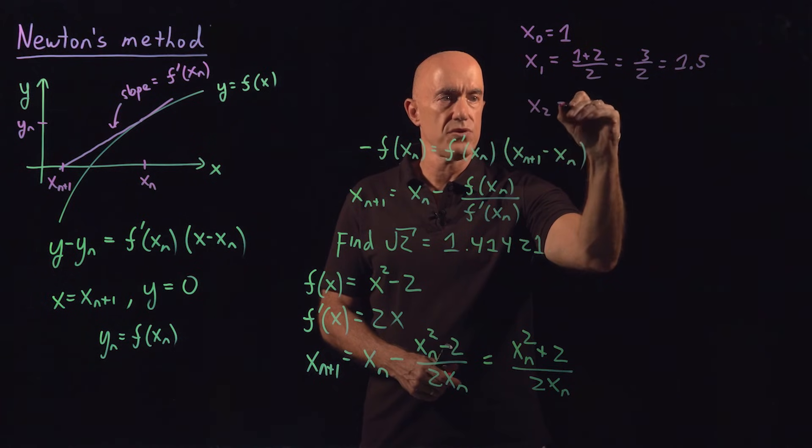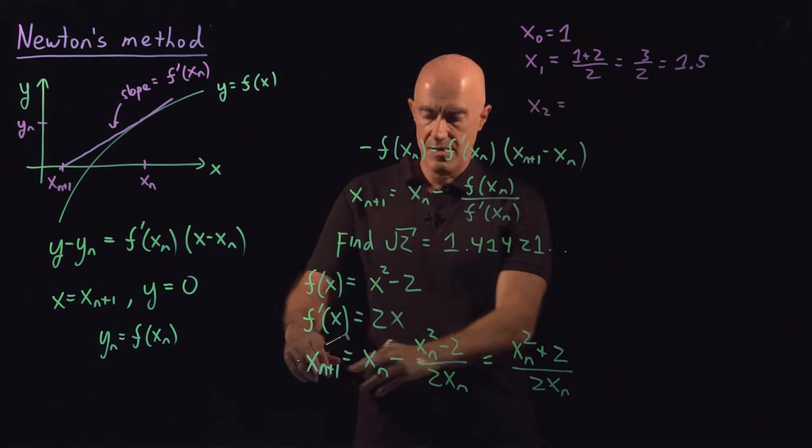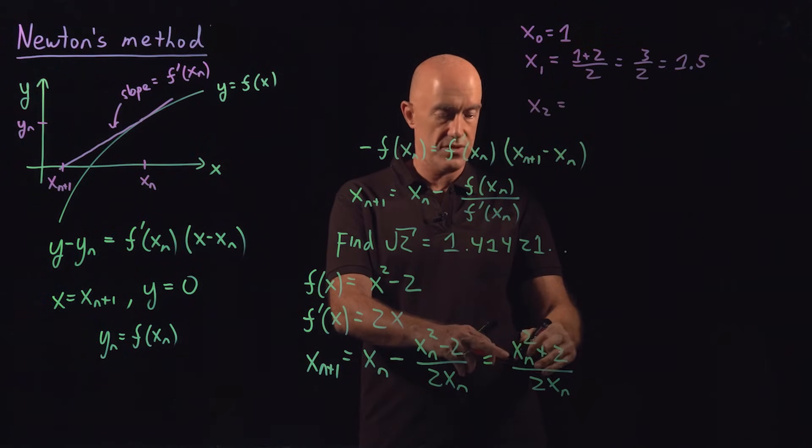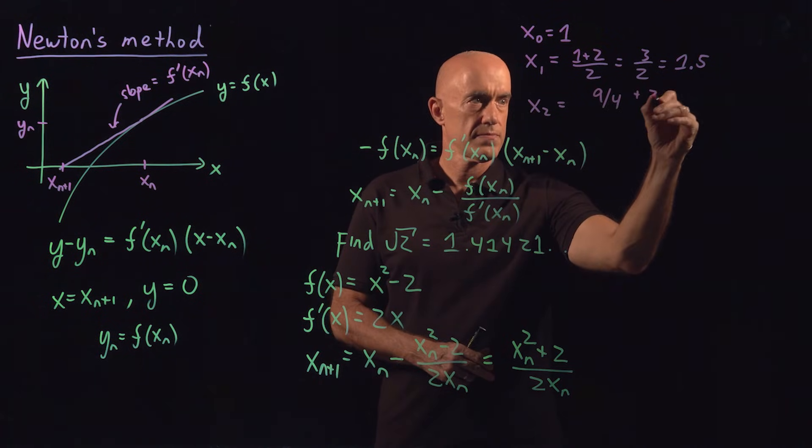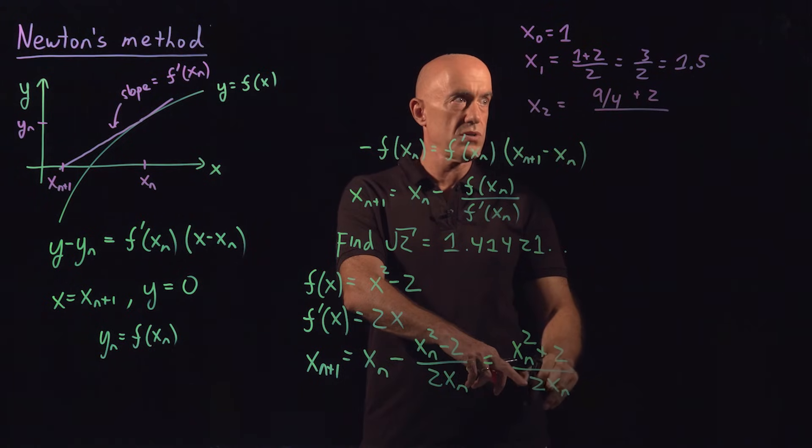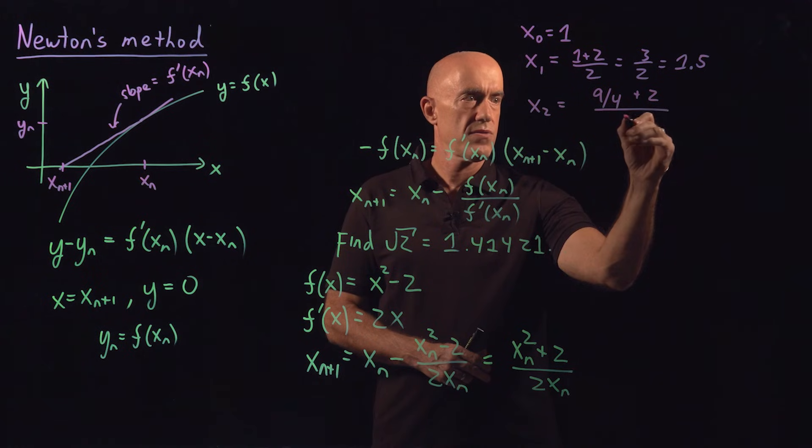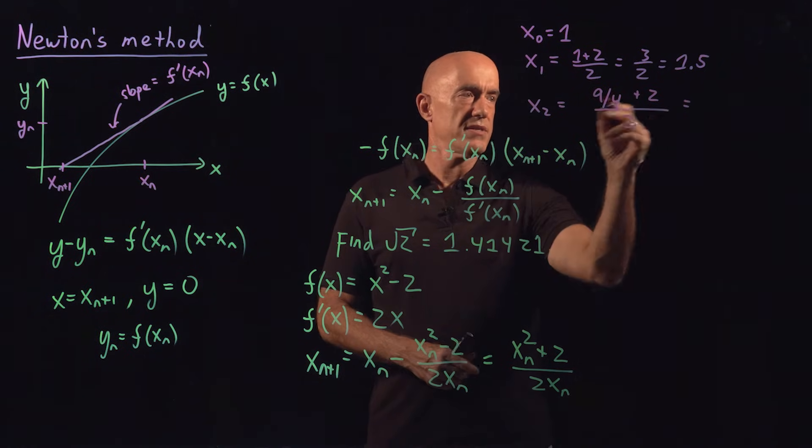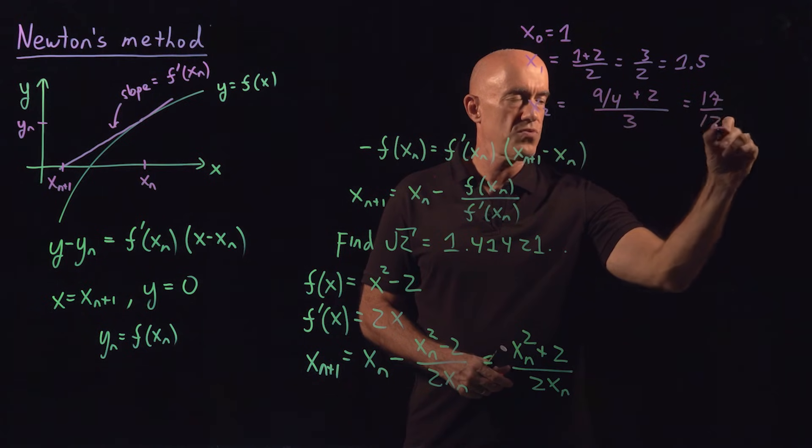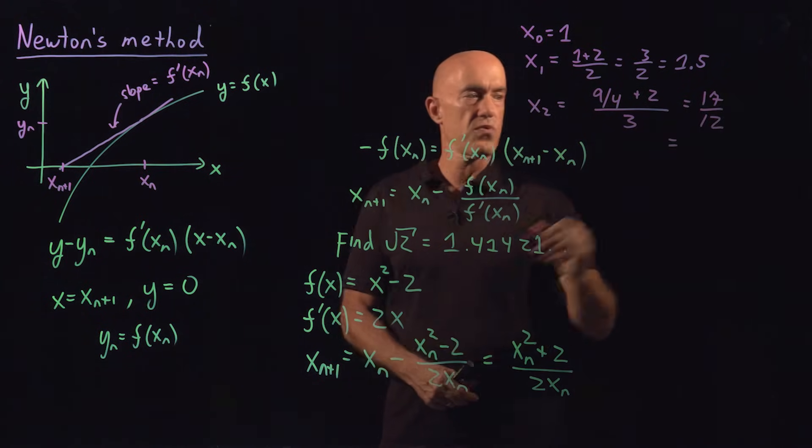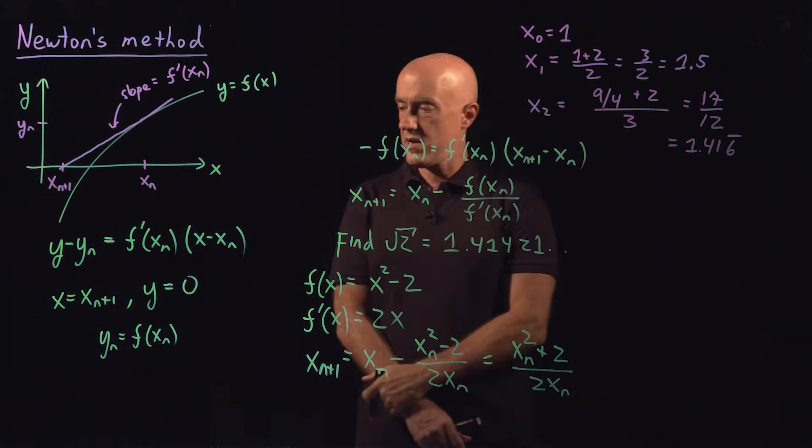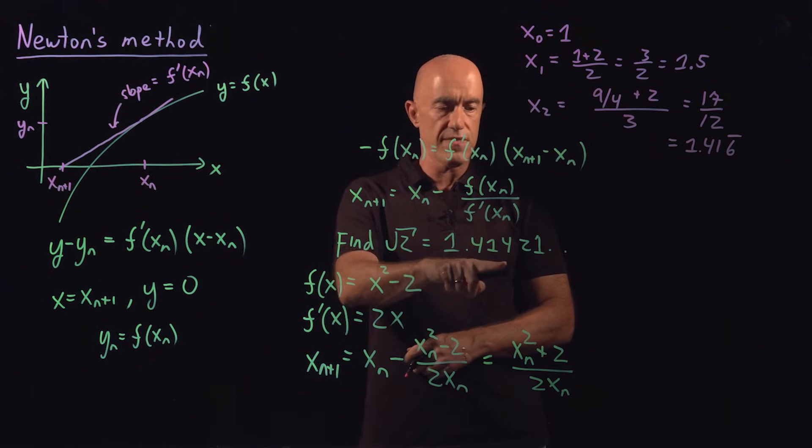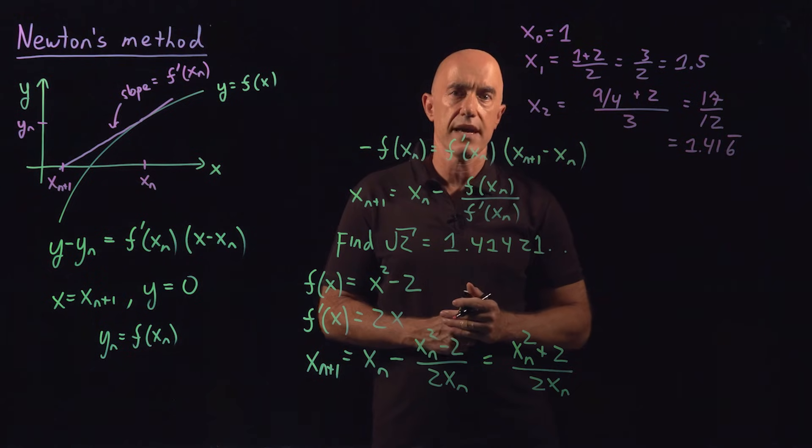Our value of x_2 then would be n equals 1. So x_1 squared, so 3 halves squared is 9 quarter plus 2 divided by 2 times 3 halves divided by 3. So this is 17 divided by 12. 17 divided by 12 is 1.416 bar there. Remember, square root of 2 is 1.414 to 1. So we're already getting fairly close.